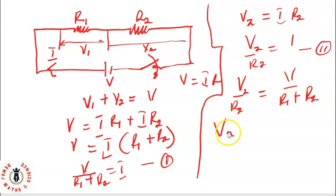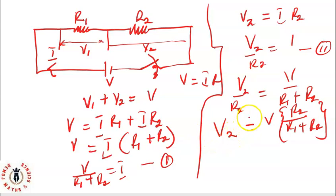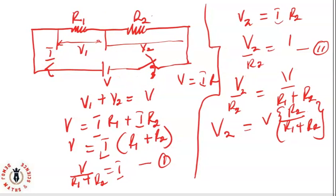Making V2 the subject of the formula, we get V2 equals V times R2 over (R1 plus R2). This forms the voltage divider principle: at any point, if I'm looking for the voltage across R2, I take the ratio of R2 to the total resistance and multiply by the total voltage.